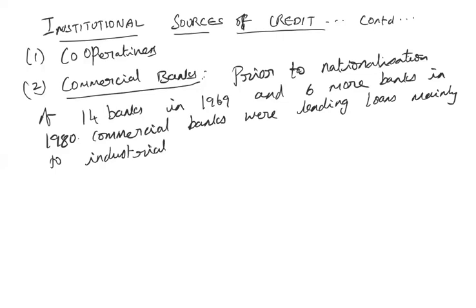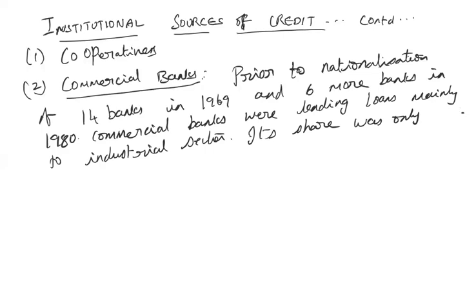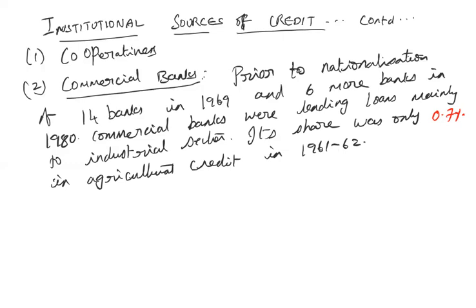Before nationalization, commercial banks were lending loans mainly to the industrial sector — catering only to industrial finance. But after nationalization, on the advice of the Reserve Bank of India and NABARD, commercial banks were asked to lend loans even for agricultural purposes. Prior to nationalization, the share of commercial banks in agricultural credit was approximately only 0.7% — that was the figure in 1961-62 — of the total institutional source of credit.